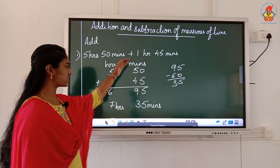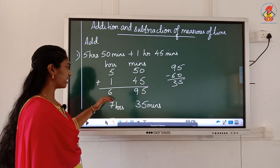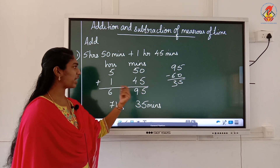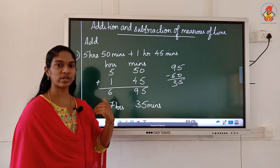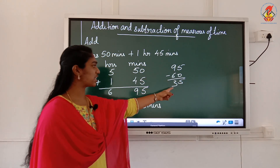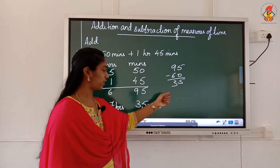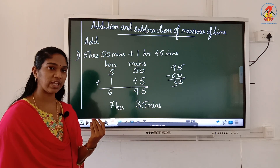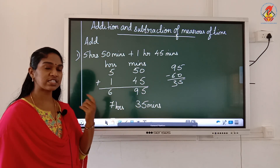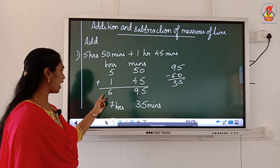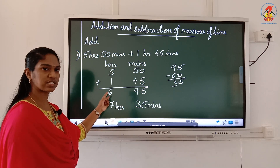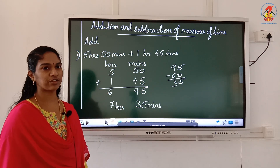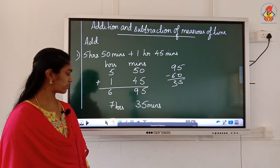So what did I do? First I added the minutes, then I added the hours. I got 6 hours 95 minutes. From 95 I took away 60 minutes, so the balance I got was 35 minutes. That 60 minutes I took away is 1 hour, so I added it to the 6 and got 7. So the answer is 7 hours 35 minutes.